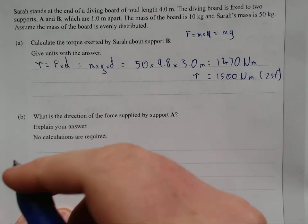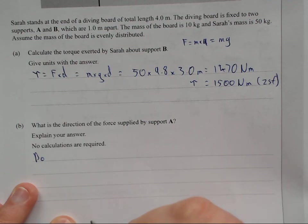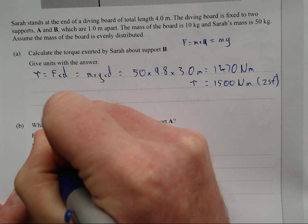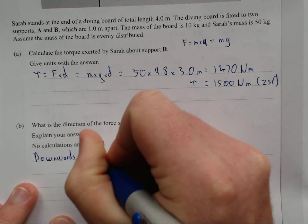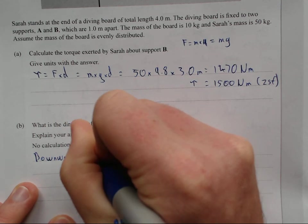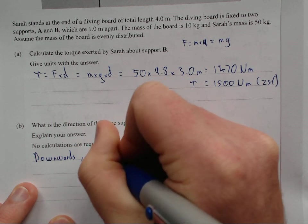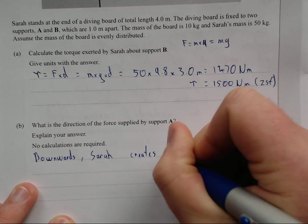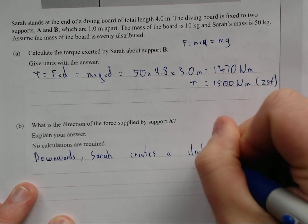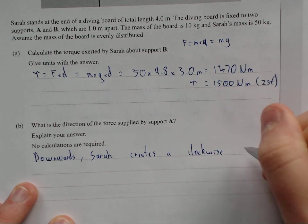So let's just say downwards direction. Downwards. If I spell this correctly. And this is, you know, Sarah creates, she creates a downwards, a clockwise torque, which is a, Sarah creates a clockwise torque.